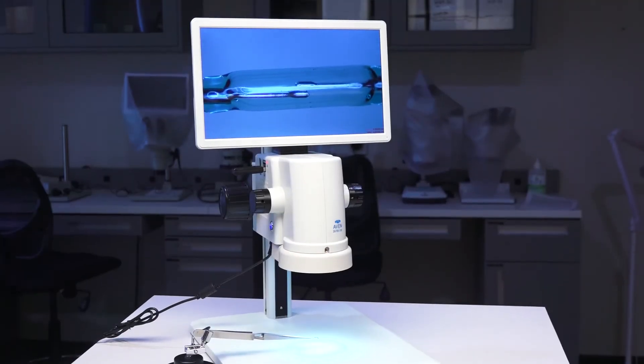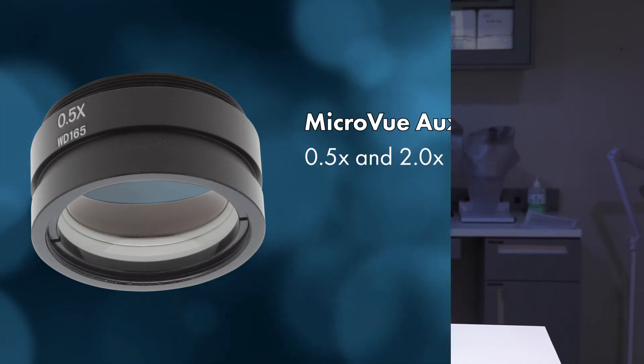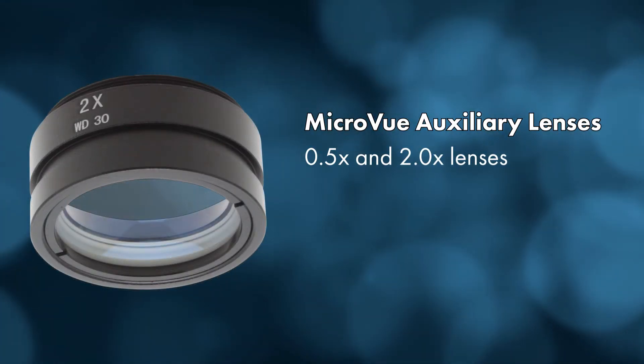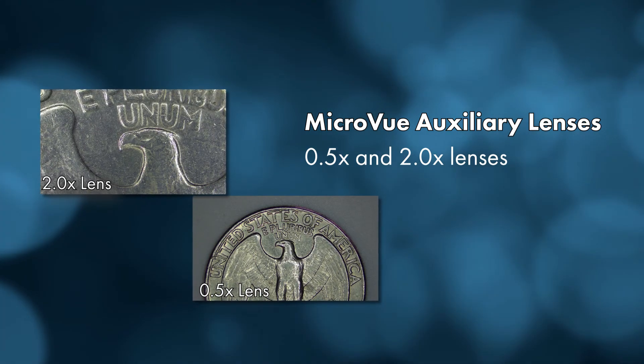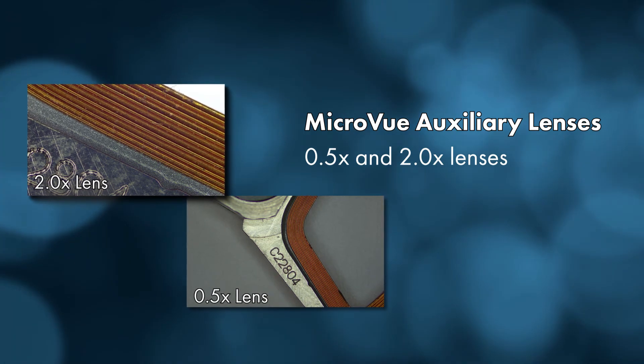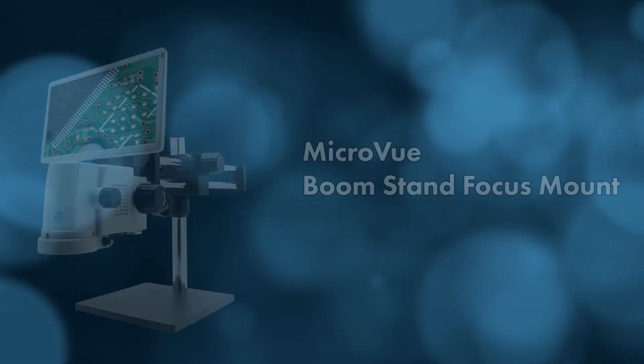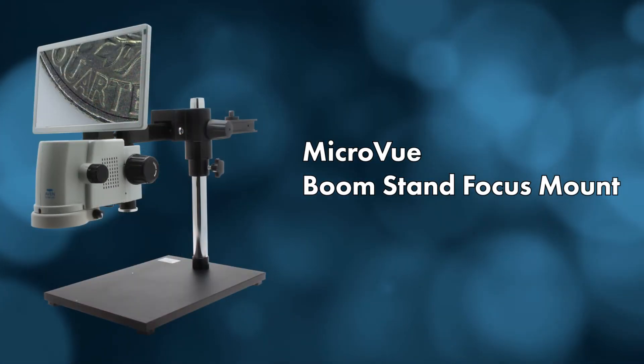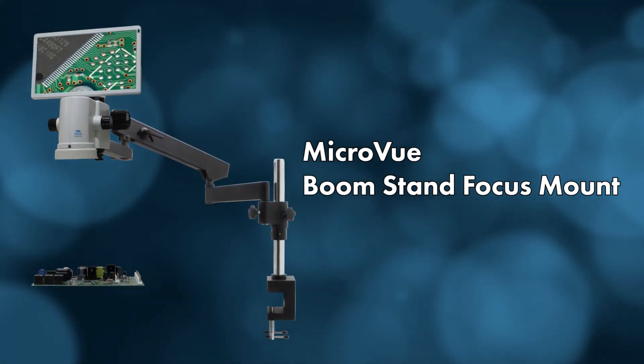The MicroView is designed to be customizable. Optional auxiliary lenses are available to adjust the MicroView's magnification range. Increase the system's magnification or working distance simply by attaching these lenses to the bottom of the system. The MicroView can also be mounted onto Avon's boom stands for additional performance and flexibility.